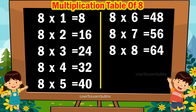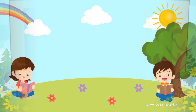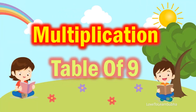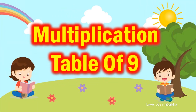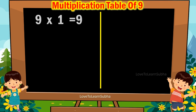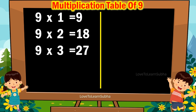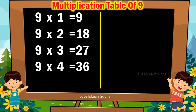8 8s are 64. 8 9s are 72. 8 10s are 80. Multiplication table of 9. 9 1s are 9. 9 2s are 18. 9 3s are 27. 9 4s are 36.